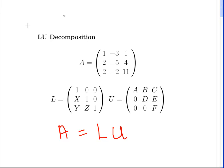L and U are comprised of undetermined coefficients. L is a lower diagonal matrix with ones along the diagonal, and it has three undetermined coefficients X, Y, and Z under the diagonal. Likewise, U is an upper diagonal matrix with coefficients A, D, and F. That's an important distinction between the two. What we're going to do is multiply out L times U in terms of these undetermined coefficients.